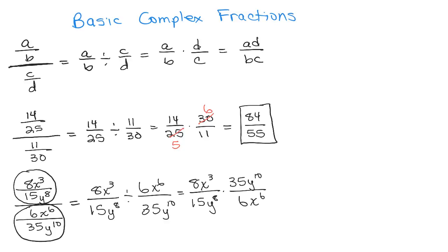So again, we're going to see if we can cancel anything. From 6 and 8, I could divide each of those by 2. So 6 divided by 2 is 3, 8 divided by 2 is 4. And with 35 and 15, 5 goes into both of those numbers. So 35 divided by 5 is 7, 15 divided by 5 is 3.